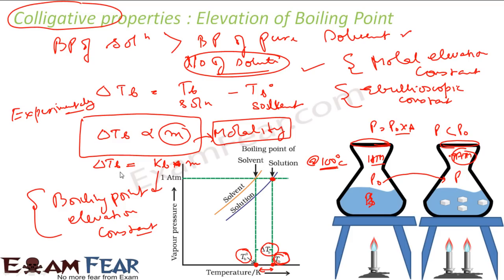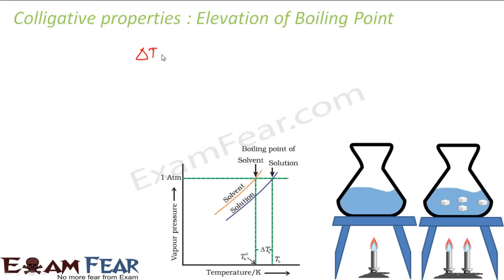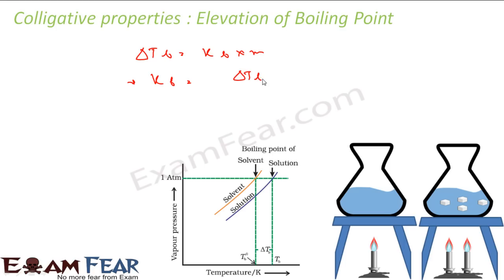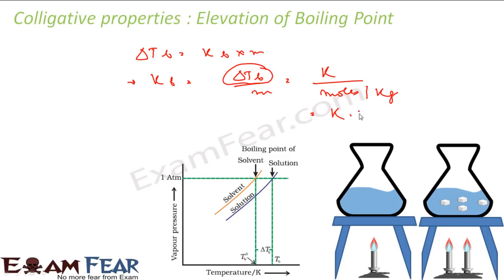What is the unit of K_b? Since delta T_b = K_b × m, we have K_b = delta T / m. Delta T is in Kelvin; please note change in temperature must be written in Kelvin, not Celsius. Molality is moles per kg. So if you solve this, the unit of K_b is K·kg/mol.